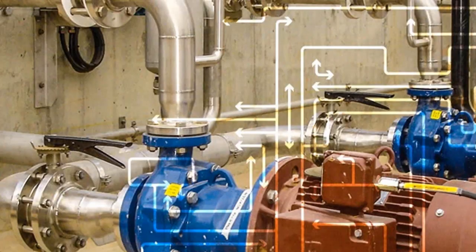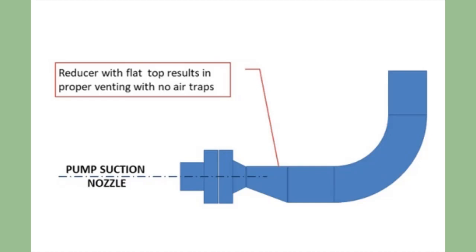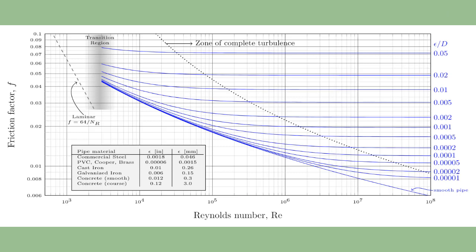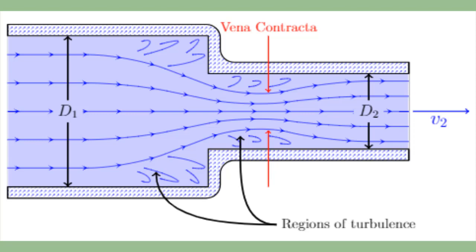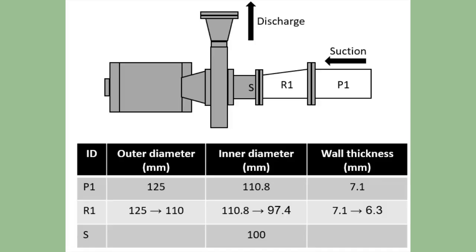Number two, pipe diameter on suction side should be equal or one size larger than pump inlet. Pipe sizing is a balancing act between cost and friction loss. Larger pipes cost more, whereas smaller pipes impose greater friction losses on the system.